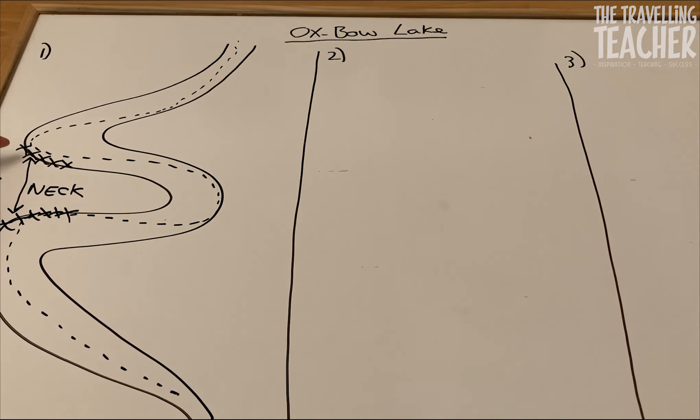So as this outside bend, the top outside bend here, where my finger is, and this outside bend, where my thumb is, if they're both being eroded, over time, the neck is going to get more narrow. These two bends are going to move towards each other. So let's move to diagram two.